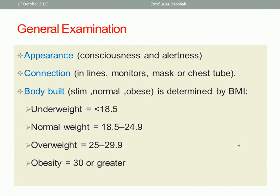What are the items of general examination? First, the appearance of the patient — is the woman conscious, drowsy, or is there disturbed consciousness? Is she completely alert, or is there disturbed consciousness? Also note if the patient is connected to lines, monitors, a mask, or a chest tube.